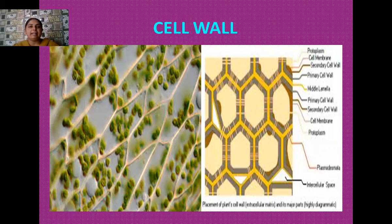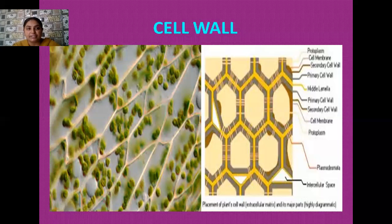The cell wall performs a variety of functions in the plant cell. The first function is it gives a particular cell its characteristic shape. The second function is that the cell wall protects the plant cell from various kinds of chemical and mechanical stresses which generally exist in their environment or habitat. The cell wall also prevents the entry of some undesirable macromolecules into the plant body.